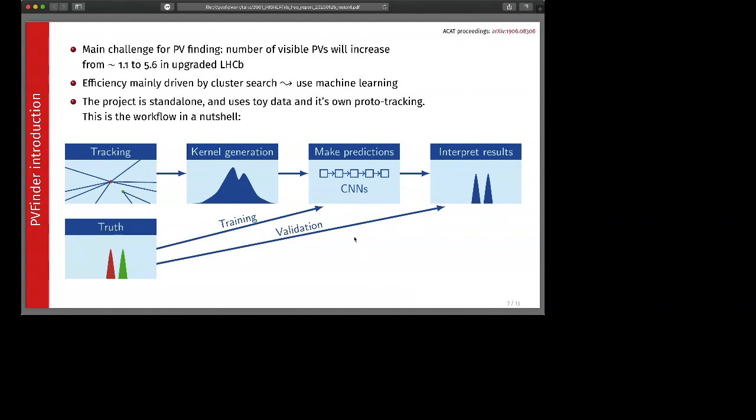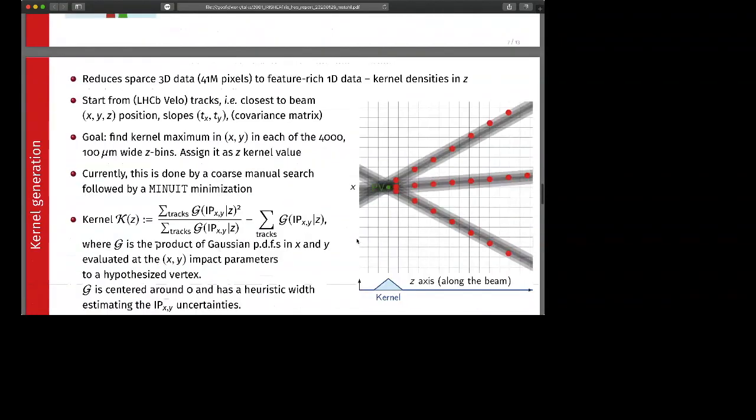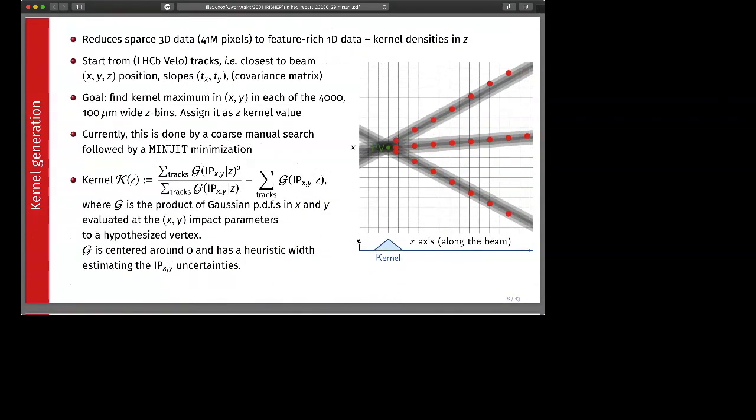The workflow is as follows. We have this proto-tracking part. Then from the tracks we build kernels. The kernels are then put into convolutional neural networks which then makes predictions and puts out results that can be integrated. We also of course know the true PV and SV positions, primary vertex and secondary vertex position, and we put them in for training and also then for validation. The first step is the kernel generation which reduces sparse three-dimensional data of the vertex locator. We have 41 million pixels to read out there to a feature rich one dimensional data set. These are kernel densities in Z where Z is the axis along the beam.